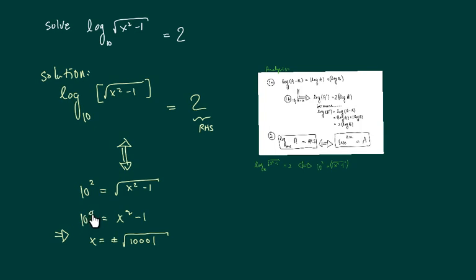Now I'm going to square both sides. I have 10 to the fourth equals x squared minus 1. Move the 1 over, and then take square roots on both sides. I have x equals plus or minus 10001.